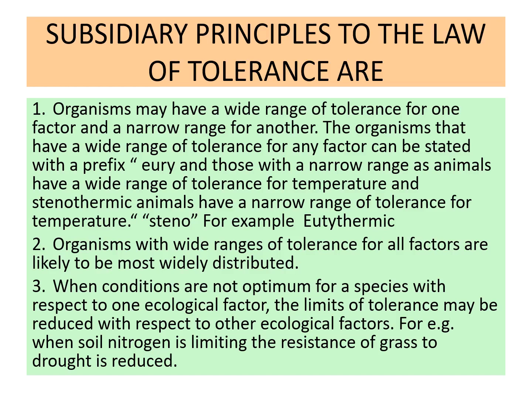When conditions are not optimum for a species with respect to one ecological factor, the limits of tolerance may be reduced with respect to other ecological factors. Individuals don't depend on one single factor — an individual requires optimum temperature, sunlight, pressure, better soil conditions, and humidity. A large number of factors together affect the placement and success of an individual in that ecosystem.